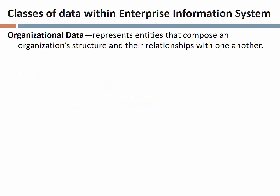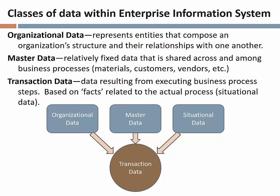There are in fact three classes of data that one finds in an enterprise information system. Organizational data is that data within our system that represents the various business entities composing how we have elected to structure our organization — and most importantly, how they relate to one another. We think in terms of things like storage locations, plants, company codes, purchasing organizations, and purchasing groups.